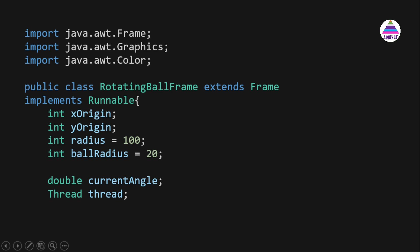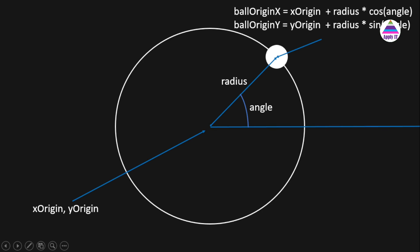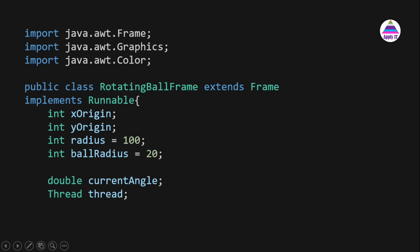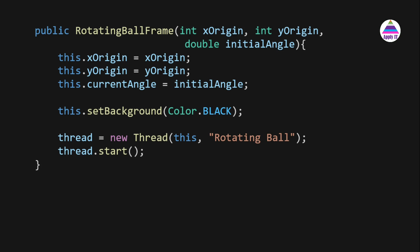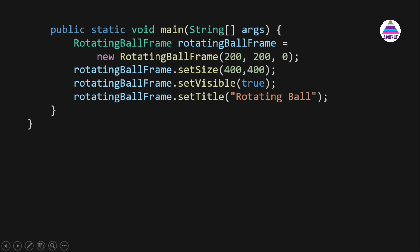Now let's see the program. We write our frame class, which extends the Frame class and implements Runnable. The data members we need are: xOrigin, yOrigin, radius, and ballRadius. Here, radius is assumed to be 100 and ballRadius is 20, which can be customized. We also need a currentAngle variable — the angle changes at every step. Because we want animation, we also need a Thread reference variable.